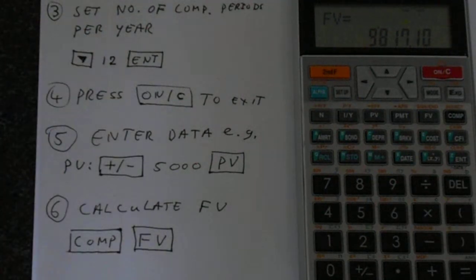So that's how you do basic time value of money type calculations on your Sharp 738 calculator. Hopefully this has been helpful and thank you very much for watching.